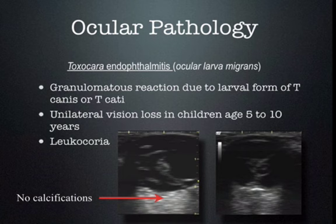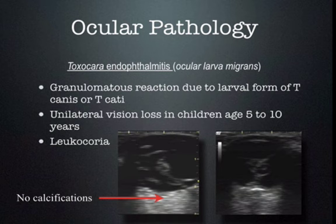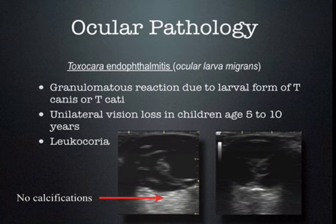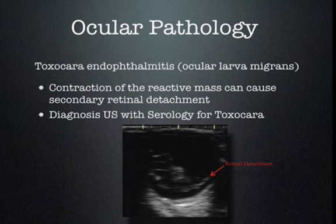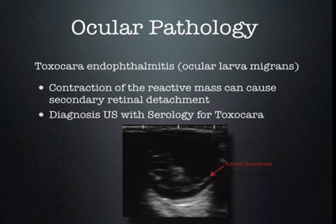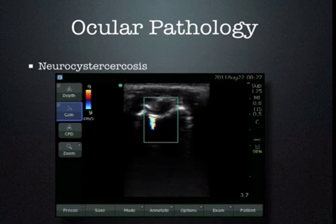Toxocara may be encountered in many areas of the world. It is a granulomatous reaction due to a larval form of Toxocara canis or cati, causing unilateral vision loss in children usually five to ten years of age. It also presents with leukocoria, making it difficult to distinguish from retinoblastoma based on physical exam. On ultrasound, Toxocara of the eye does not have calcification. It forms synechiae within the vitreous that can cause a retinal detachment by contracting and pulling the retina off the posterior portion of the eye. If you have the diagnosis made by ultrasound, confirm it with serology.